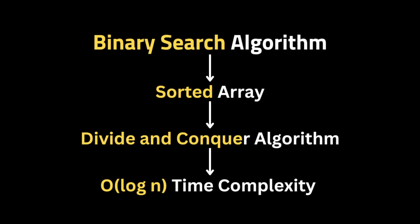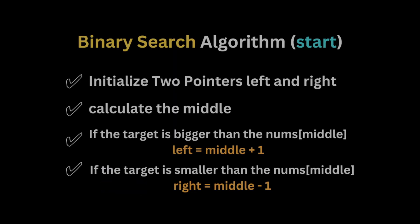The best technique to solve this problem is by using the binary search algorithm. Binary search is an efficient algorithm for searching for an item from a sorted list. It is also known as the divide and conquer algorithm, the half-interval search, or the logarithmic search, and it has a time complexity of O(log n).